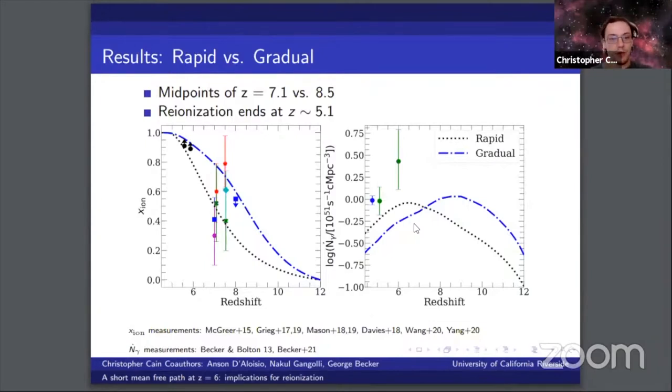Note that both models end reionization around redshift 5.1, so both of these are late reionization models. The left panel shows the ionization history for both models alongside constraints from the literature, and the right panel shows the emissivity history.